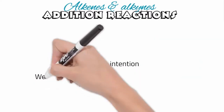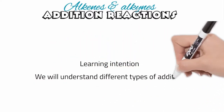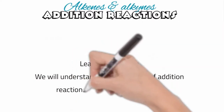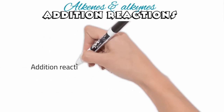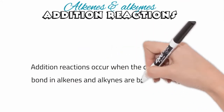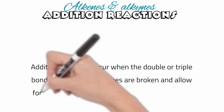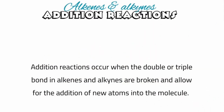In this video we are going to look at addition reactions in organic chemistry and we're going to understand the chemical reactions that can be undertaken by alkenes and alkynes. An addition reaction occurs when the double or triple bond in alkenes and alkynes respectively are broken and allow for the addition of new atoms into the molecule.